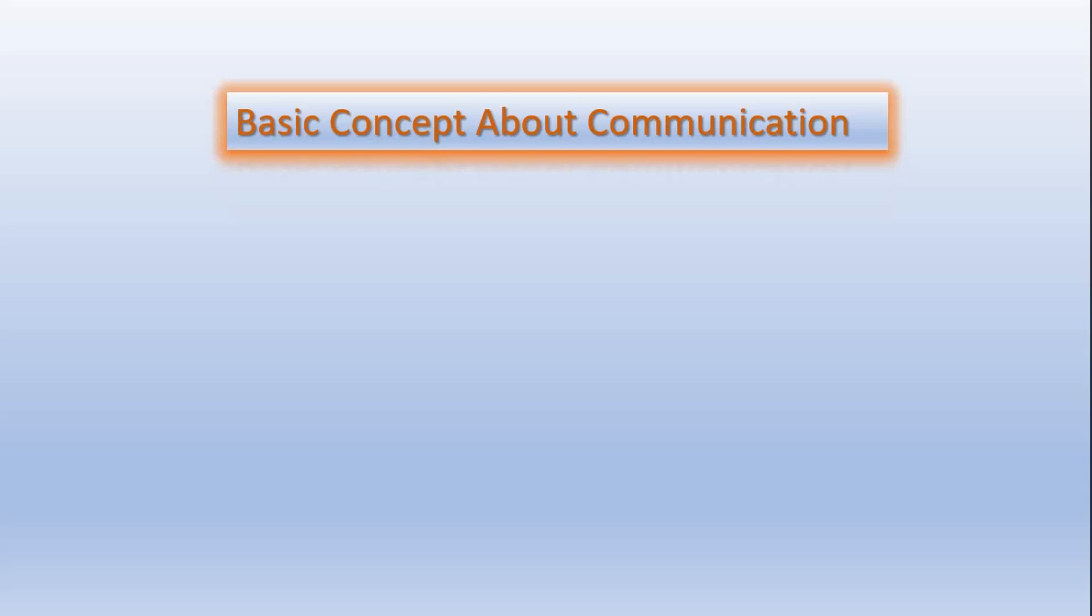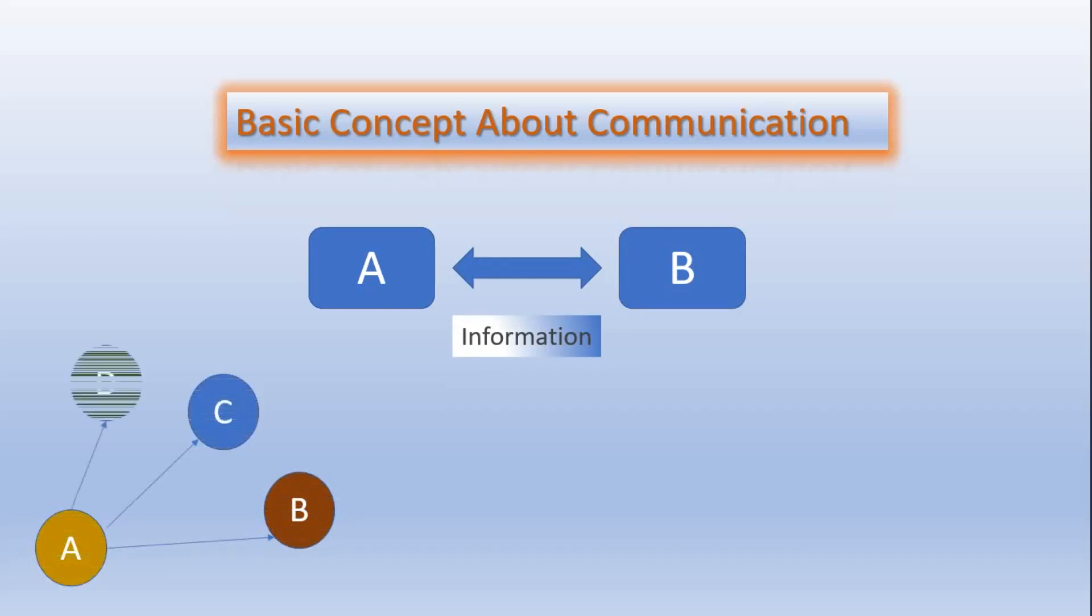Here we can see two points as A and B. The main function of communication is to exchange information between these two points by sending signals which are basically electrical in nature. This exchange of information could be wired or wireless. It may be point to point, point to multipoint, or even it could be network also. Sometimes communication may be done by broadcasting.